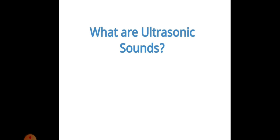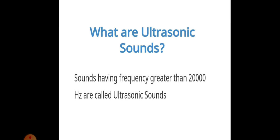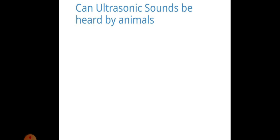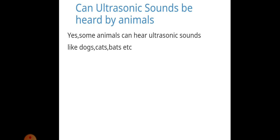What are ultrasonic sounds? Sounds having frequency greater than 20,000 hertz are called ultrasonic. Can ultrasonic sounds be heard by animals? Infrasonic and ultrasonic sound cannot be heard by the human ear. But an ultrasonic sound having frequency more than 20,000 hertz can be heard by animals.